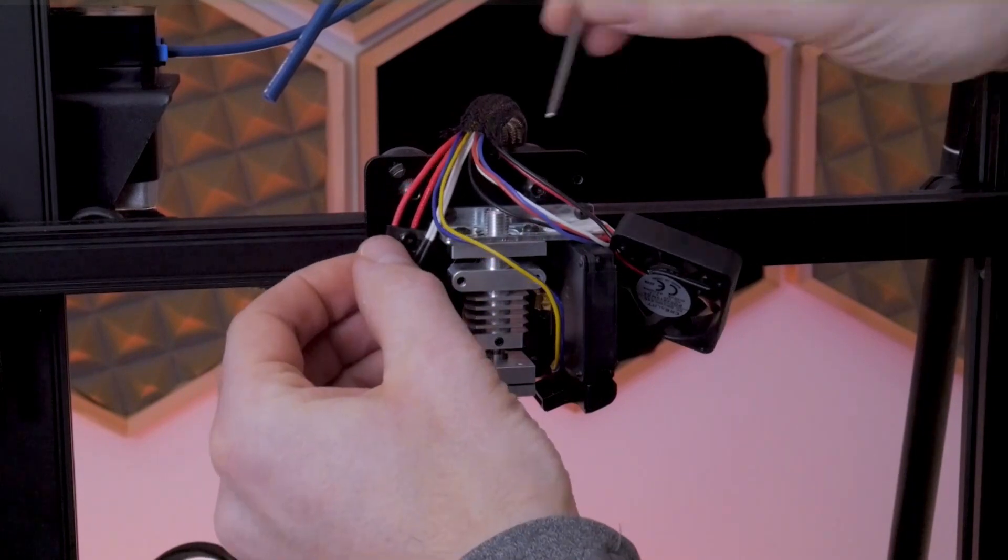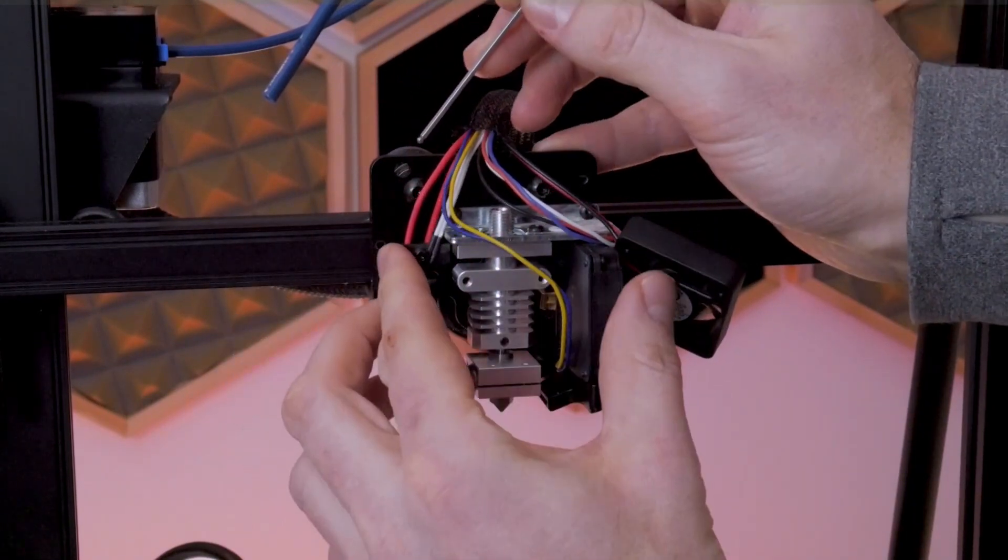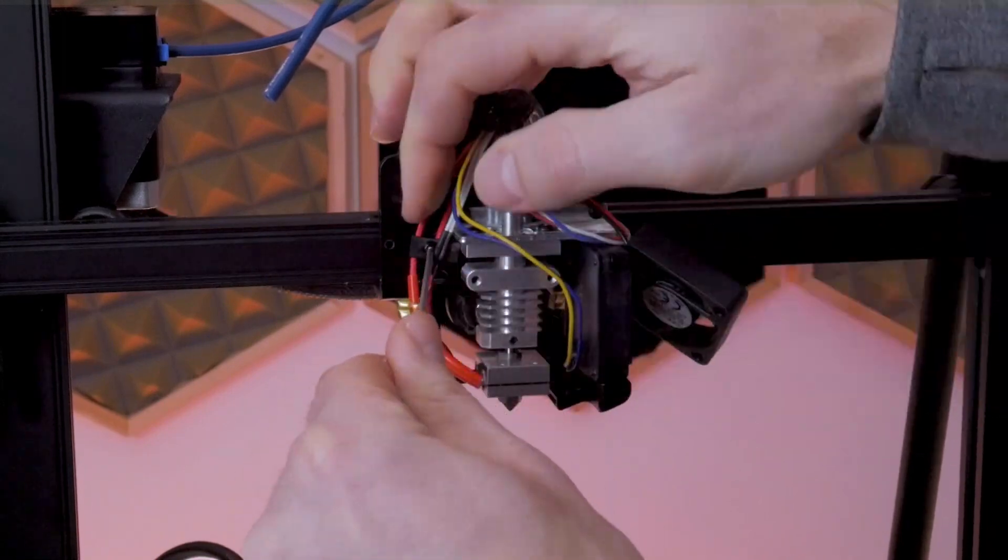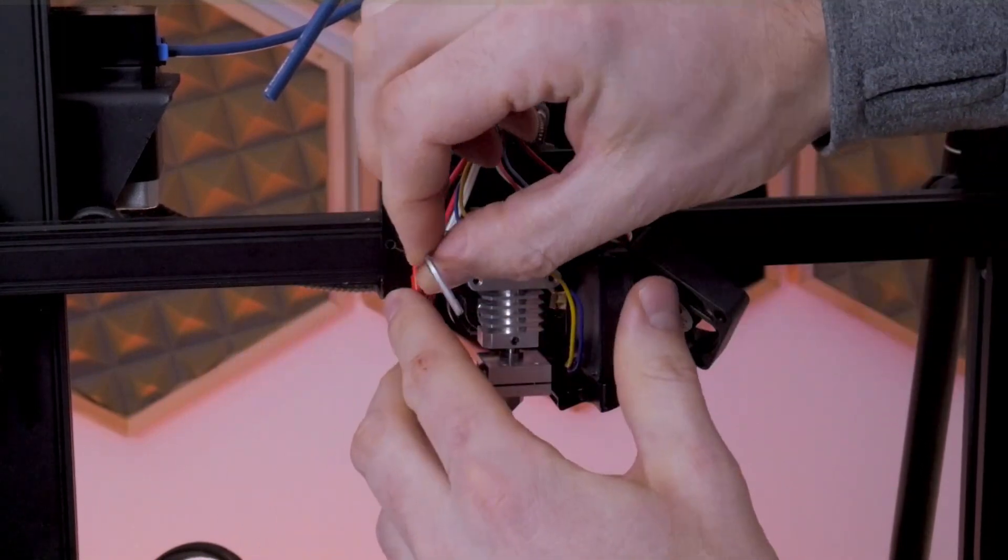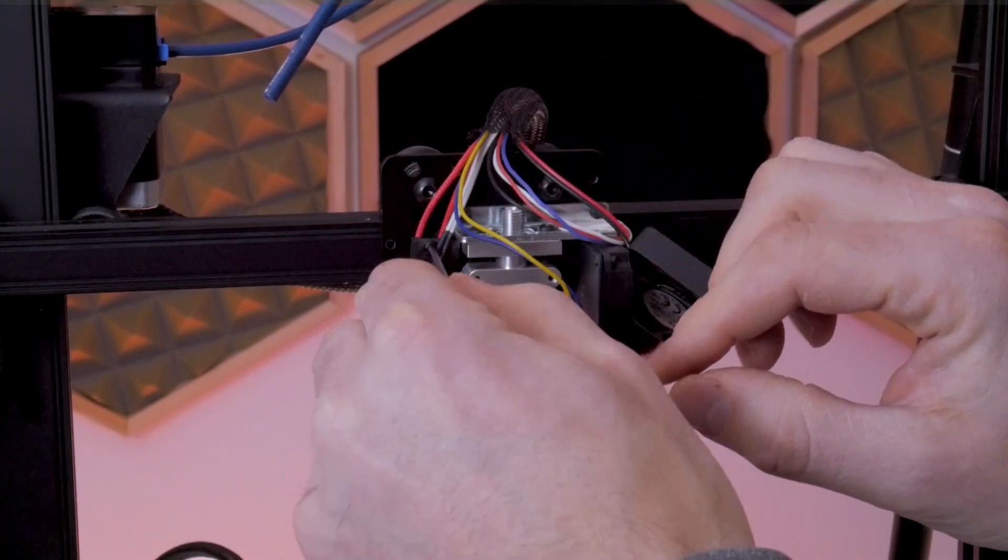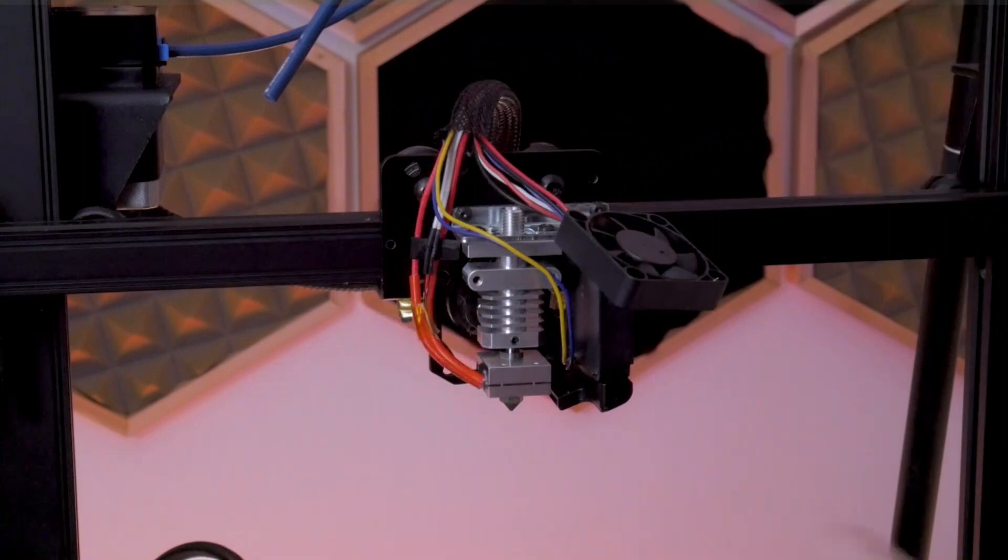The strain relief clip for the heater cartridge wires goes on next. If you take a close look at it, there's a tabbed side and the tabbed side goes on the right hand side, closer to the whole hot end assembly. There's a cutout in the metal X carriage that carries the whole hot end assembly, and that's where it fits into.